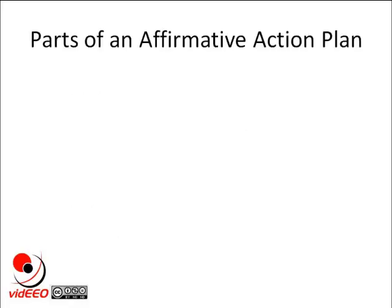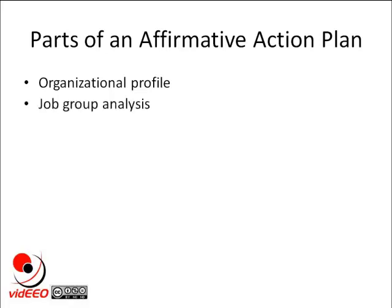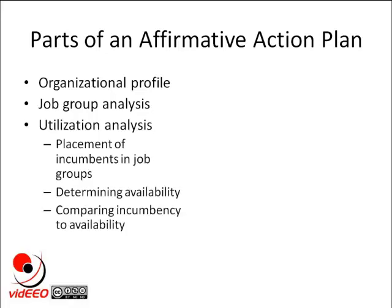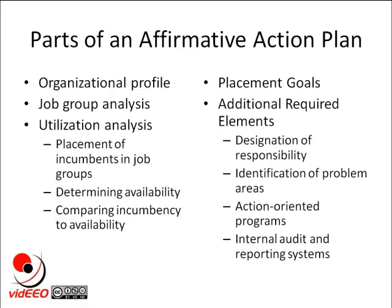I'm going to assume that you have a basic familiarity with Affirmative Action Plans. Typically, an Affirmative Action Plan has five parts. First, there's the organizational profile, which is basically an enhanced organizational chart. Next is the job group analysis, followed by a utilization analysis. The utilization analysis is, in my view, the key component of the Affirmative Action Plan. The results of the utilization analysis will guide the last two components of the plan: the placement goals and additional required elements. Common components within the additional required elements include designation of responsibility, identification of problem areas, action-oriented programs, and internal audit and reporting systems.